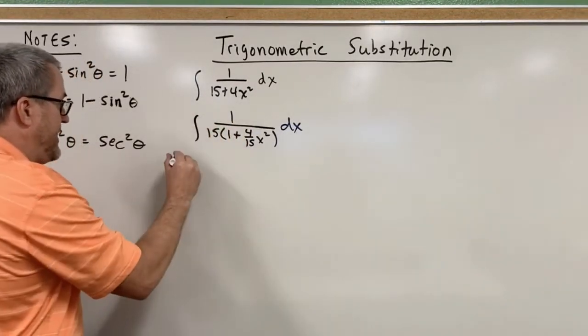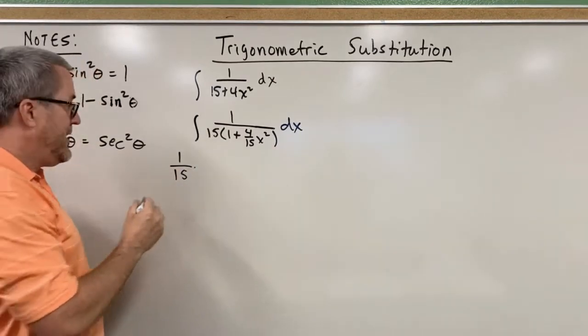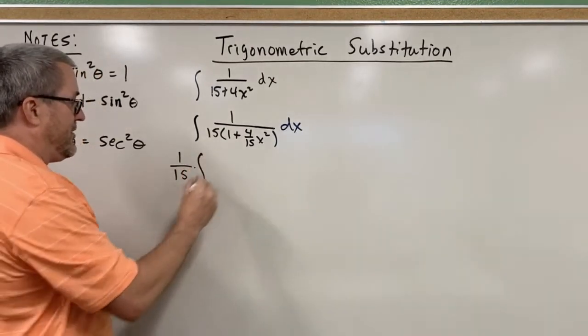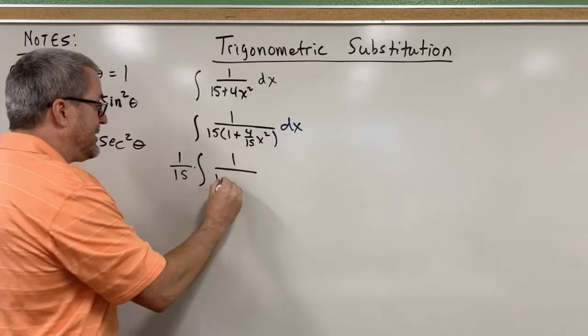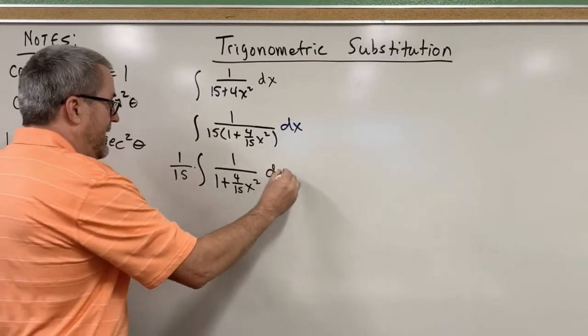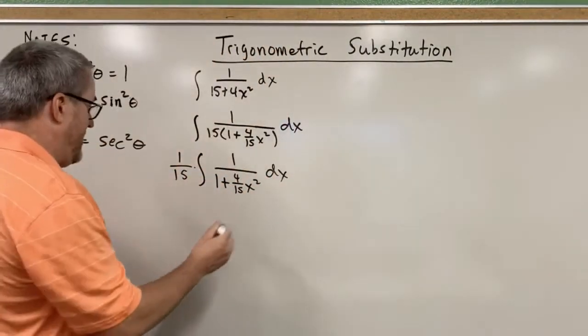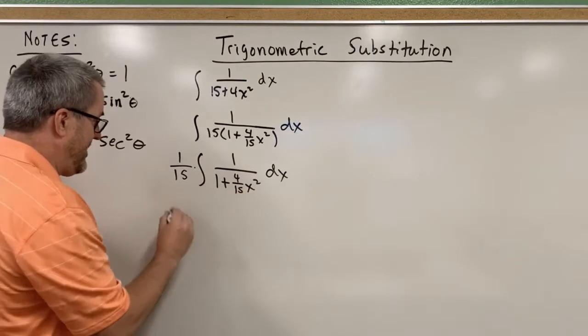Now that 1 fifteenth is just a coefficient, or a multiplier, or a factor that we can pull out in front of the integral, so we're getting closer to our goal of having 1 plus tangent squared.